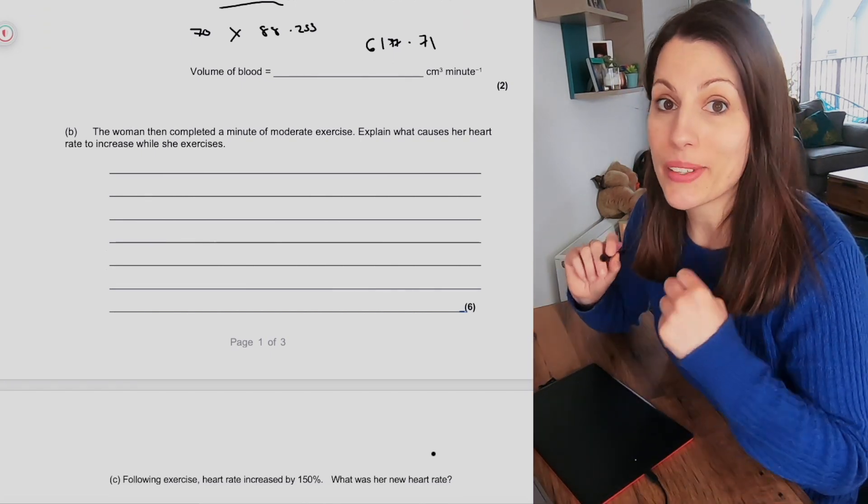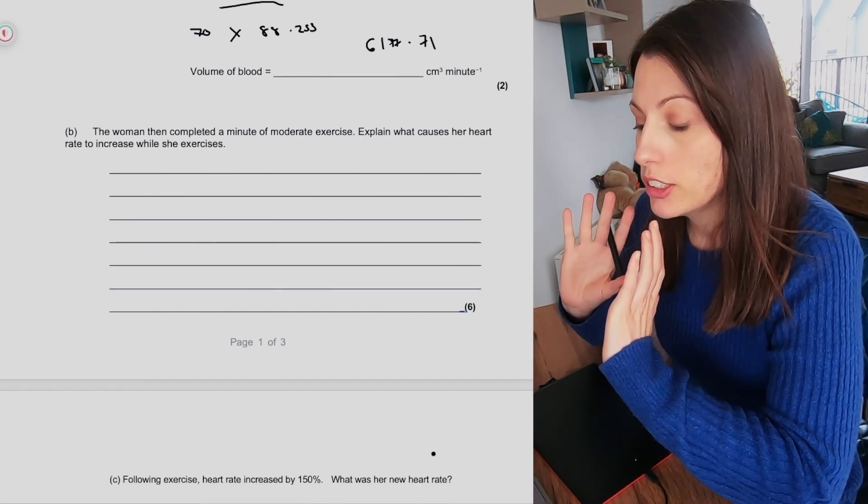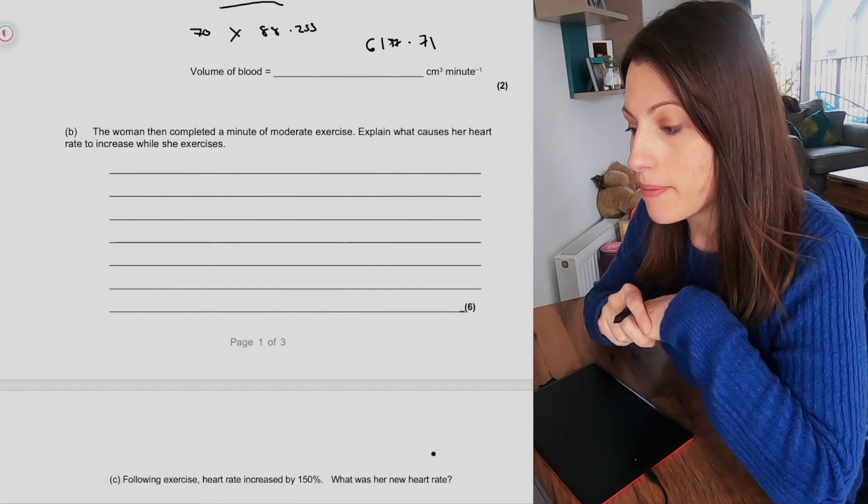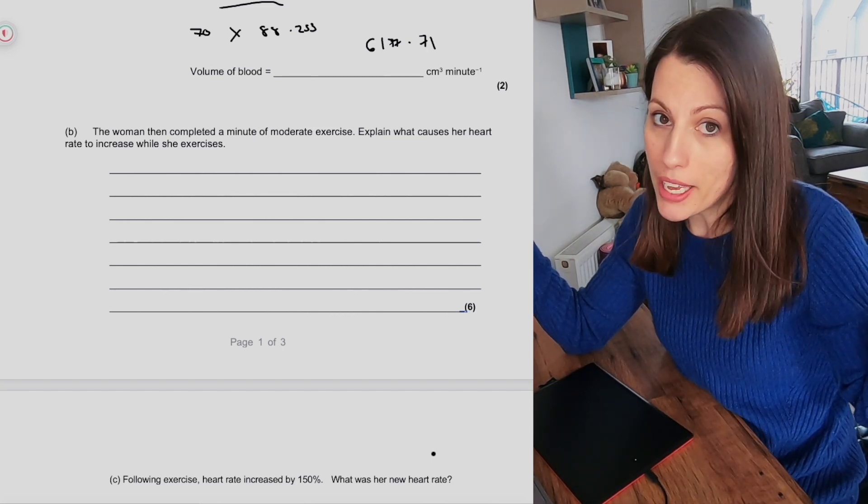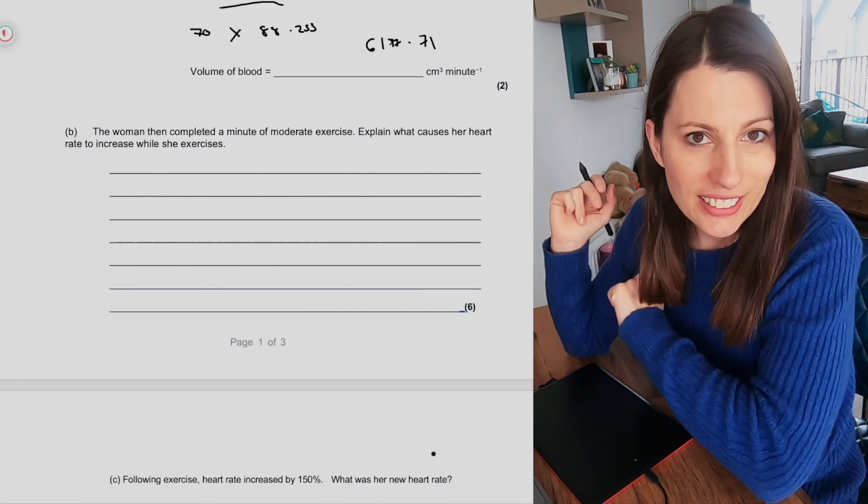The next bit we then get to is a theory question. So the woman then completed a minute of moderate exercise, and that woman would be me. So let's cut to the exercise.